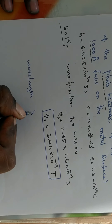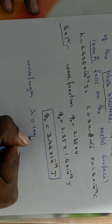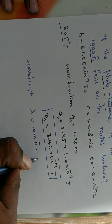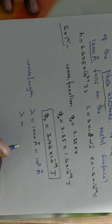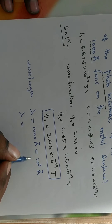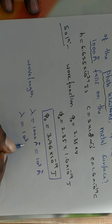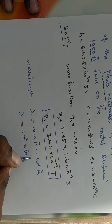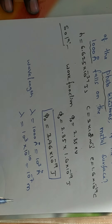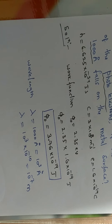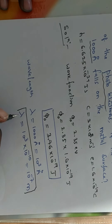Wavelength lambda is equal to 1000 angstrom, that is 10 to the power of 3 angstrom. Lambda is equal to 10 to the power of 3 into 10 to the power of minus 10, which equals 10 to the power of minus 7 meter. This is the lambda value.